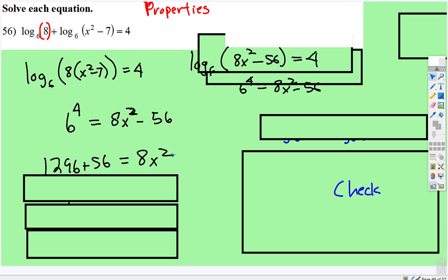We're going to use the square root method of quadratics because there's no linear term, no x to the 1st power. Add 56 to both sides, and we have 8x squared equals 1352. Divide both sides by 8.